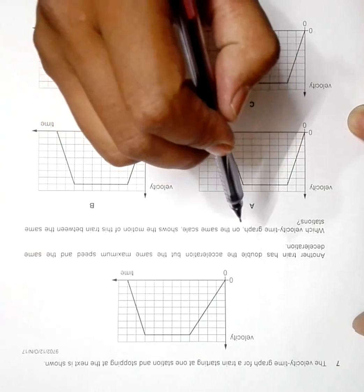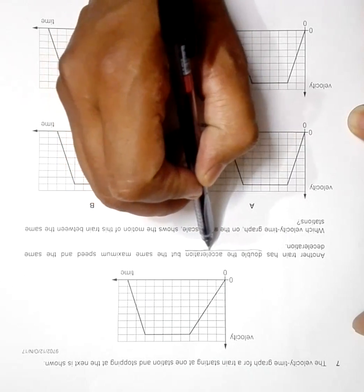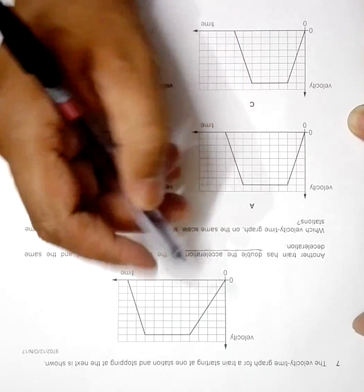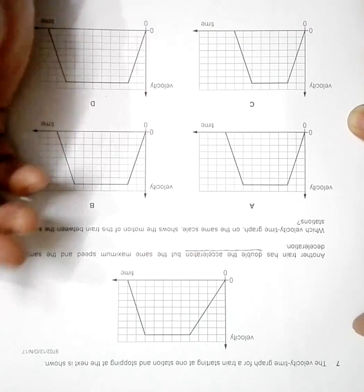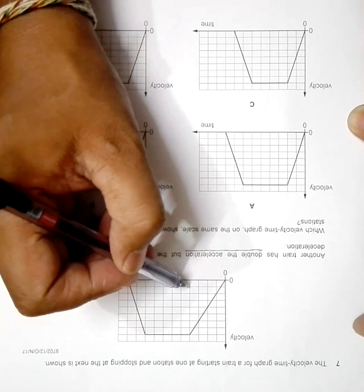First, let's see. The second train has got double acceleration, so that means the slope of the graph while accelerating should be double. The slope of the graph should be double.